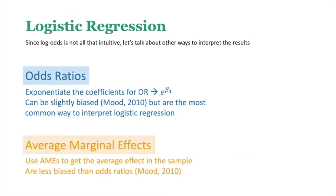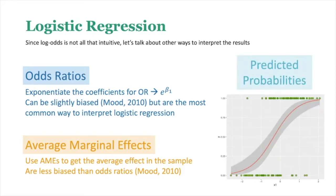Next are the average marginal effects, which average the effect across all possible values of x in the sample. They are interpreted just like regular OLS regression. The last interpretation method is predicted probabilities — essentially showing where the sigmoid curve falls. You can point out the probability at various levels of x, or just show a graph of the predicted probabilities, which is a great way to visualize the relationship.